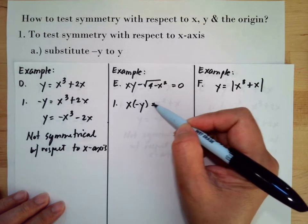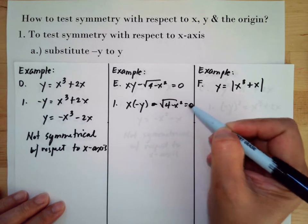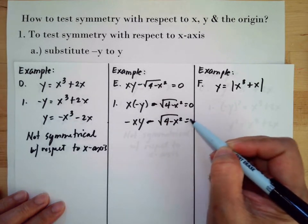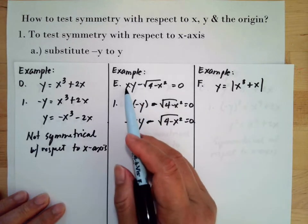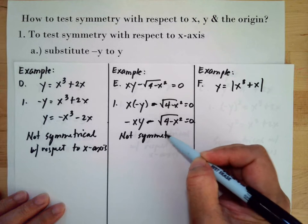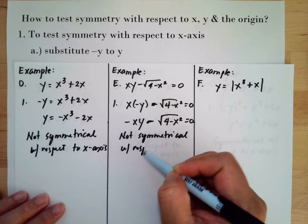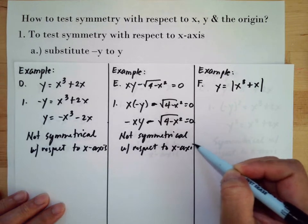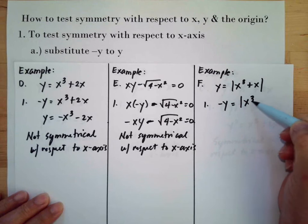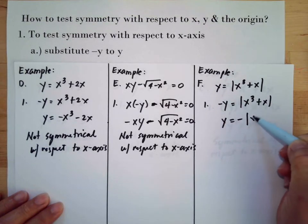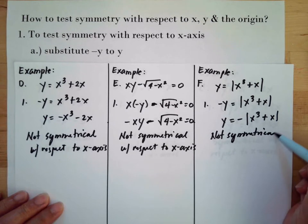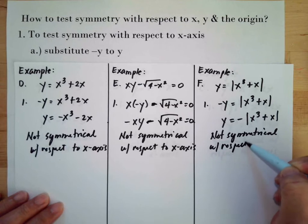We substitute negative y, giving us minus the square root of 4 minus x squared equals 0, so we have negative xy minus the square root of 4 minus x squared. This is not the same as the original equation because the sign changed from positive to negative, so it is not symmetrical with respect to the x-axis. Similarly, substituting negative y into the absolute value expression also changes the sign, so it is not symmetrical with respect to the x-axis.